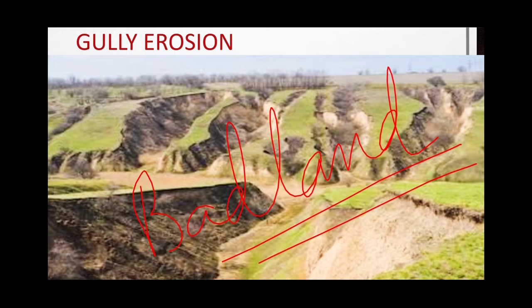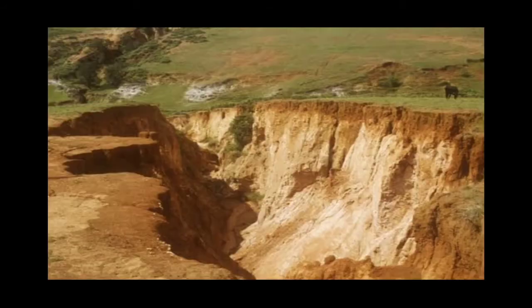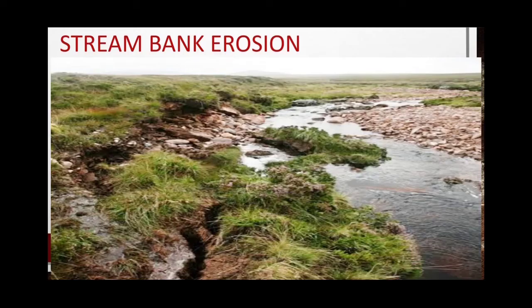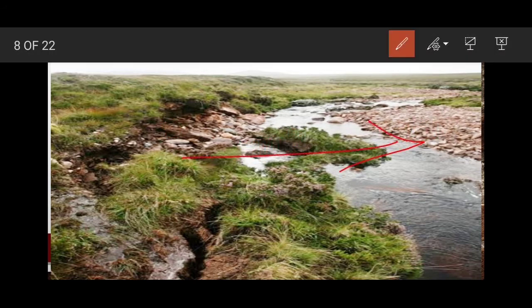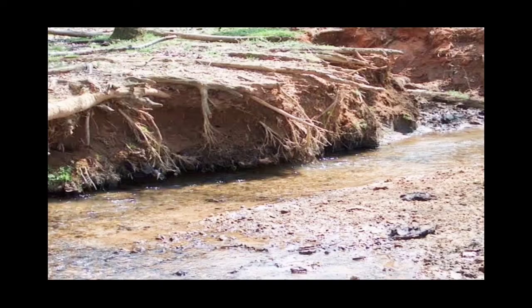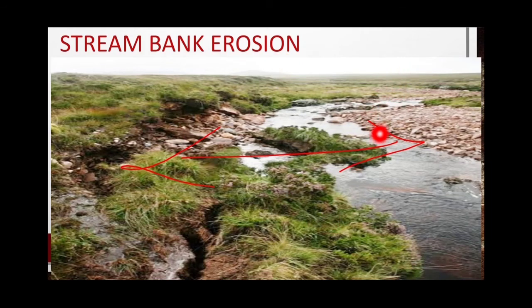Gully erosion can leave the land completely unfit for agriculture. The next type is stream bank erosion. A river also erodes laterally — widening itself by eroding its banks, which are the two sides of a river. When the river erodes its banks and eats up the soil there, it is known as stream bank erosion.